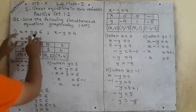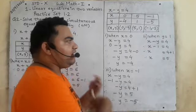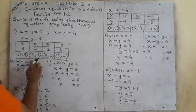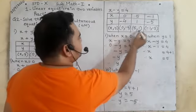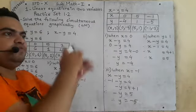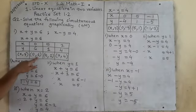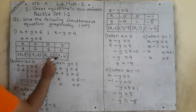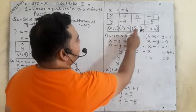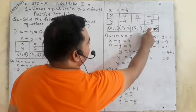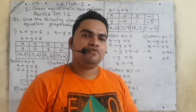This is how we solve three solutions for each equation. After solving, we will plot these coordinates on the graph. The first coordinate is always x and the second is always y. After plotting all points for both equations, we draw the graph.